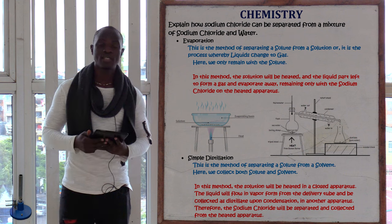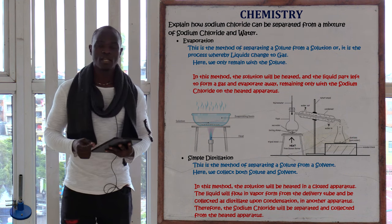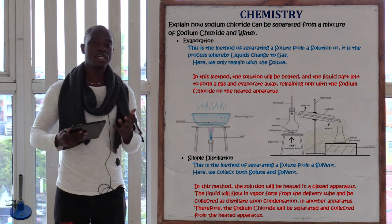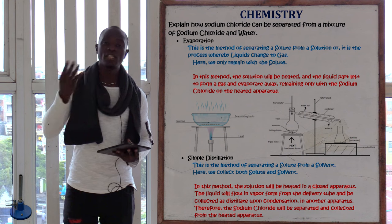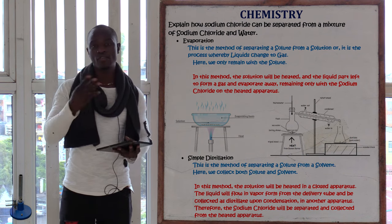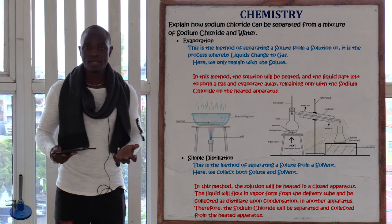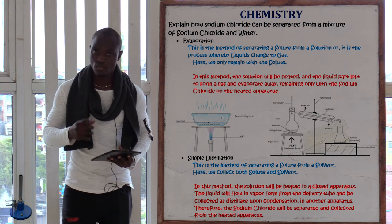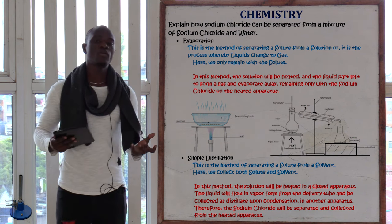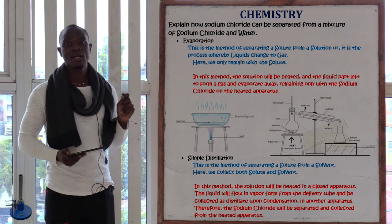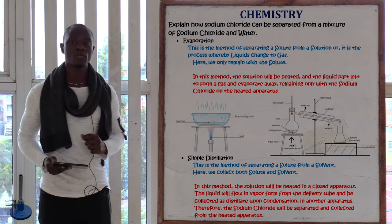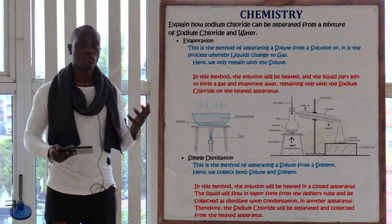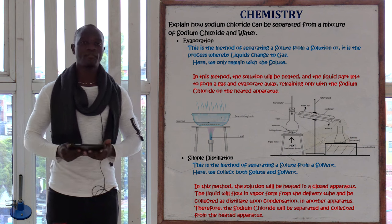Using evaporation to obtain sodium chloride: when we heat the mixture and let the liquid evaporate to the atmosphere, we will only remain with sodium chloride, which is the solute we want. If we heat the solution, the liquid evaporates, and the only thing we remain with is sodium chloride. Simply heat the mixture, let the liquid evaporate, and you remain with the sodium chloride.